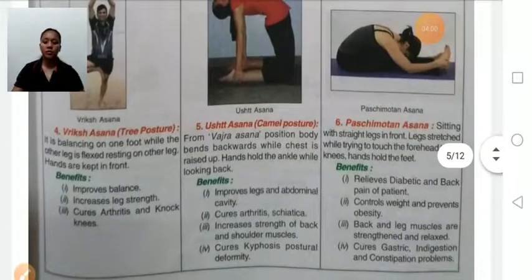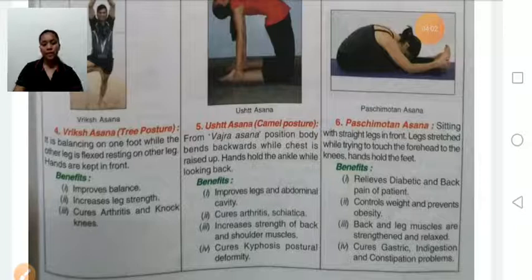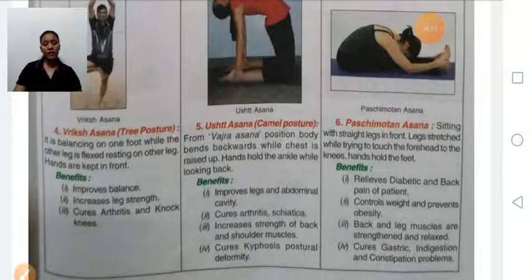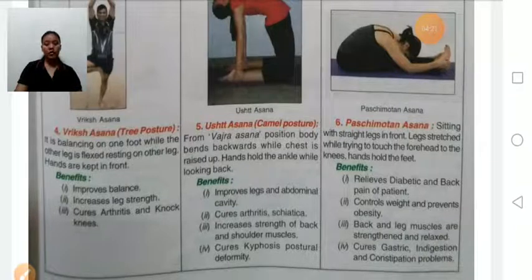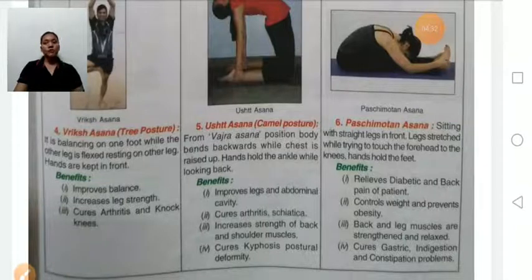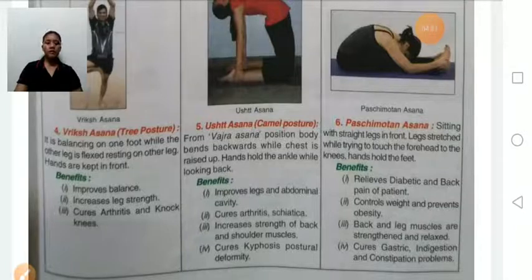Vriksasana, also known as tree posture, means balancing the body on one foot while the other leg rests on the standing leg. It improves balance, increases strength of the leg, cures asthma, and prevents knock knee — which is when your knees touch each other. Persons with knee dislocation should avoid it.